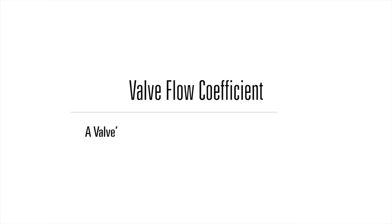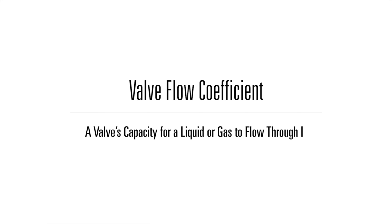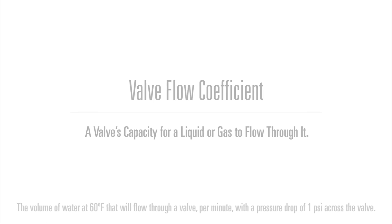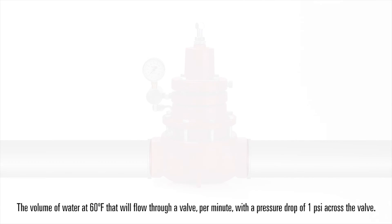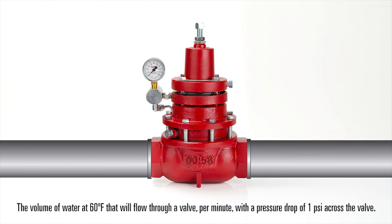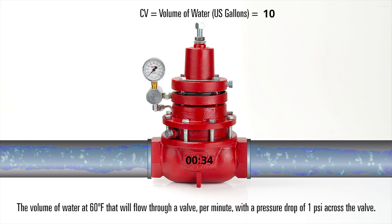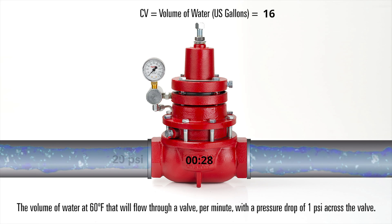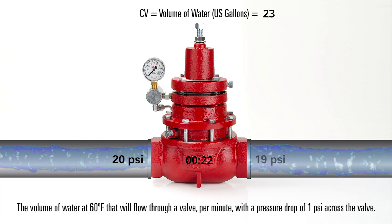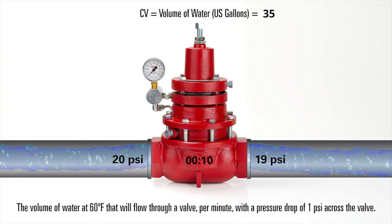Valve flow coefficient is a valve's capacity for a liquid or gas to flow through it. It's technically defined as the volume of water at 60 degrees Fahrenheit that will flow through a valve per minute with a pressure drop of 1 psi across the valve.